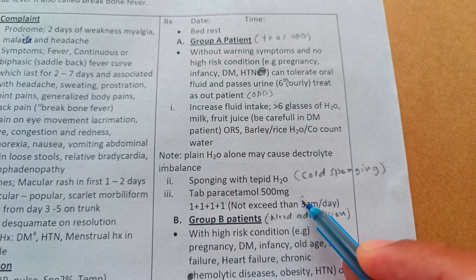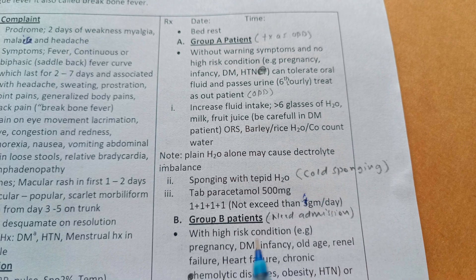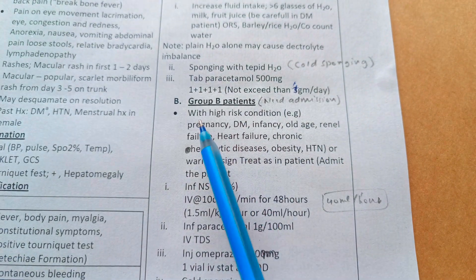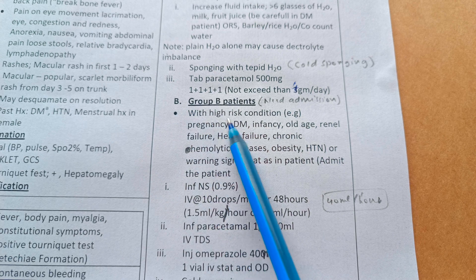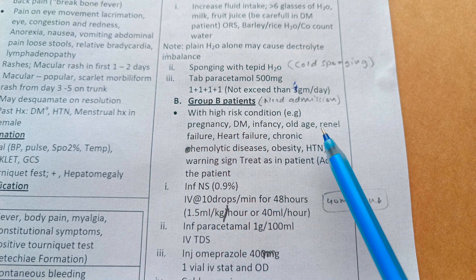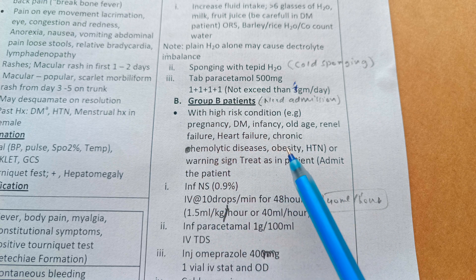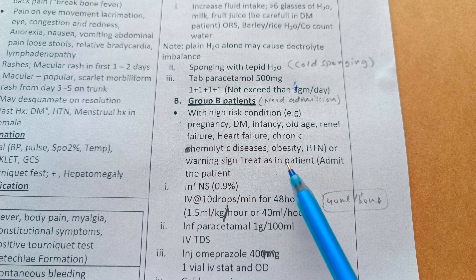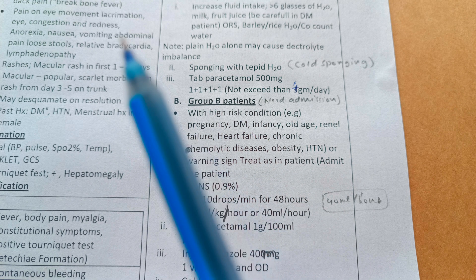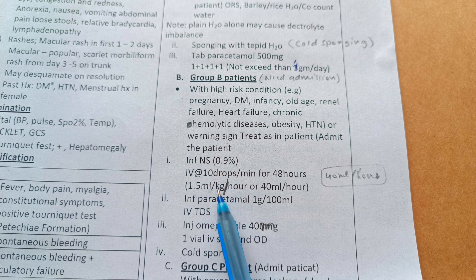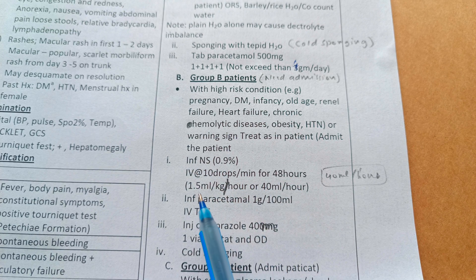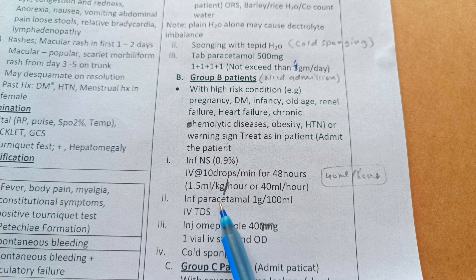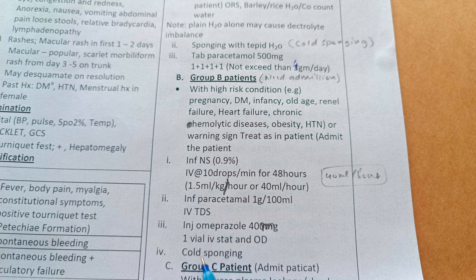Group B patients need admission. These patients have high-risk conditions like pregnancy, diabetes, infancy, old age, renal failure, heart failure, chronic hemolytic disease, obesity, or hypertension, or have warning signs. Admit the patient; give IV normal saline 0.9% at 10 drops per minute for 48 hours, or 1.5 ml/kg/hour or 40 ml/hour. Also give IV paracetamol TDS and SOS, omeprazole 40 mg once daily, and do cold sponging.